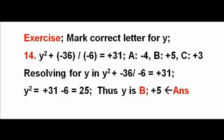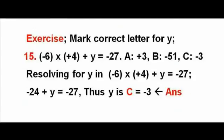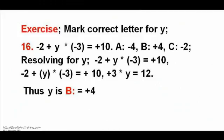Multiple choice exercise: mark the correct letter as the answer. Resolving brackets, division, multiplication, add and subtract gives y² = 25 and y = +5, which is B of the list. Next exercise: resolving brackets, division, multiplication, add and subtract gives y = −3, which is C of the list.